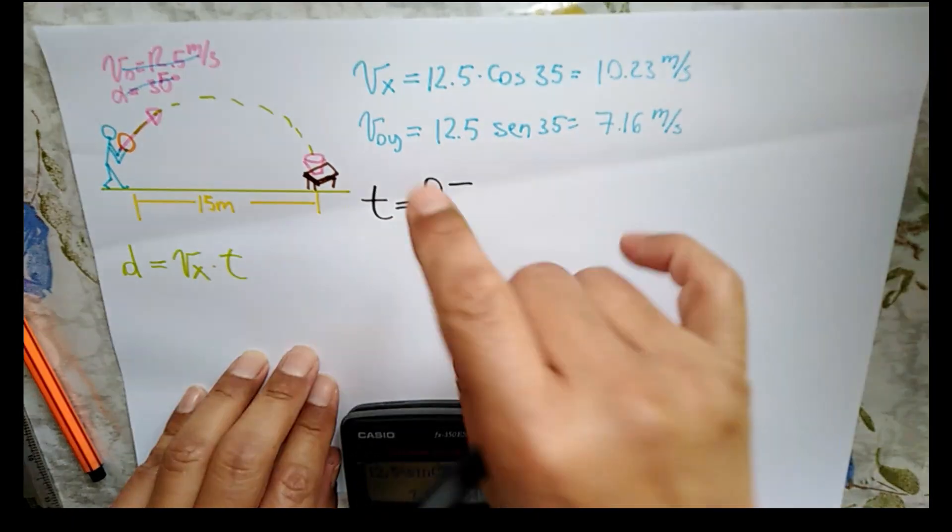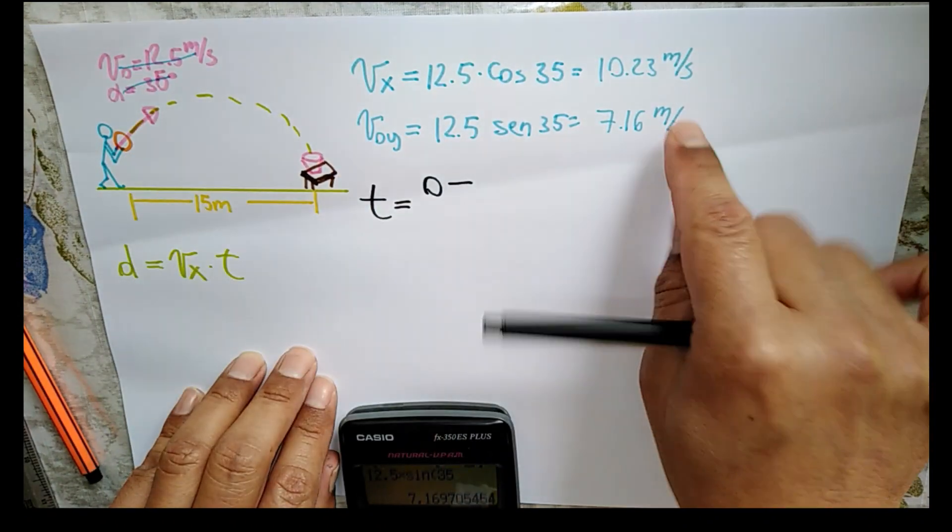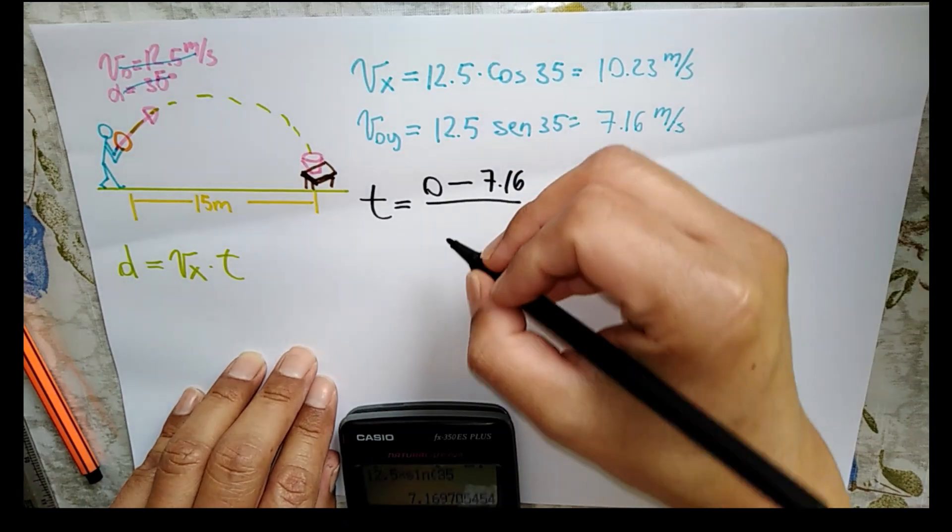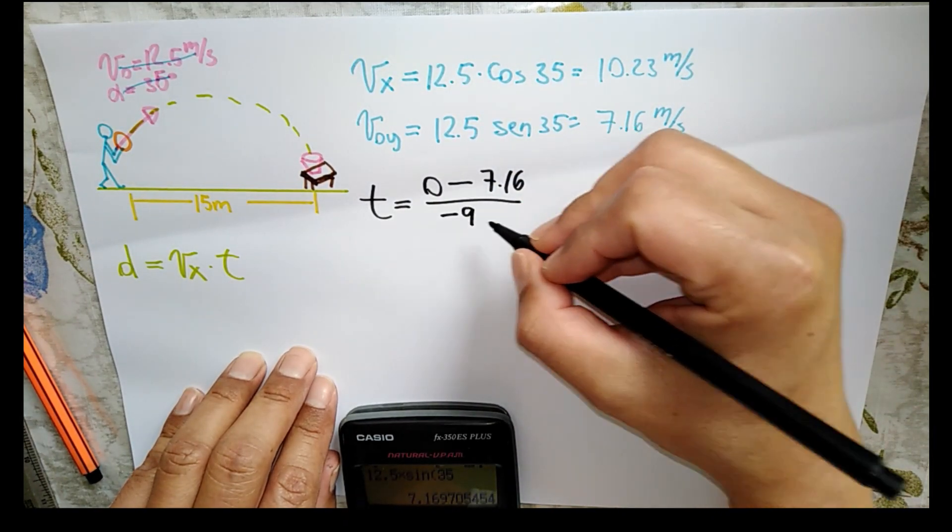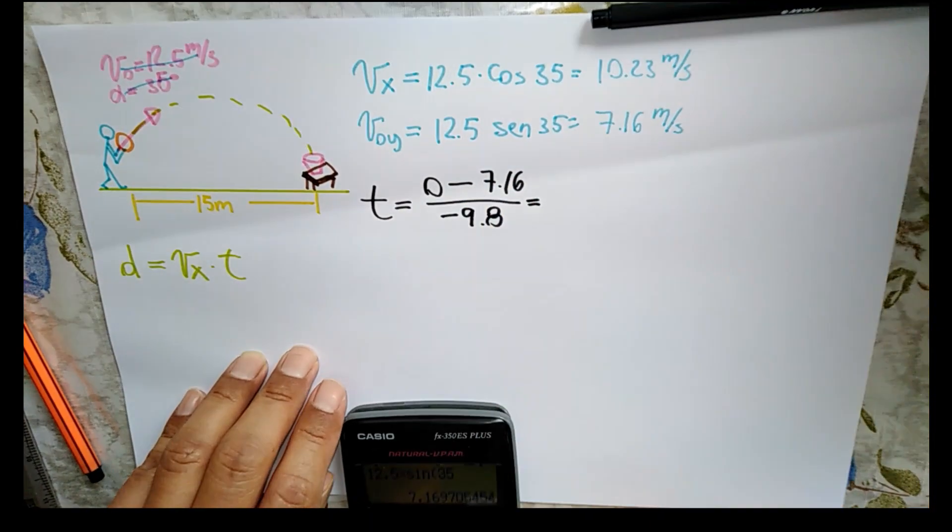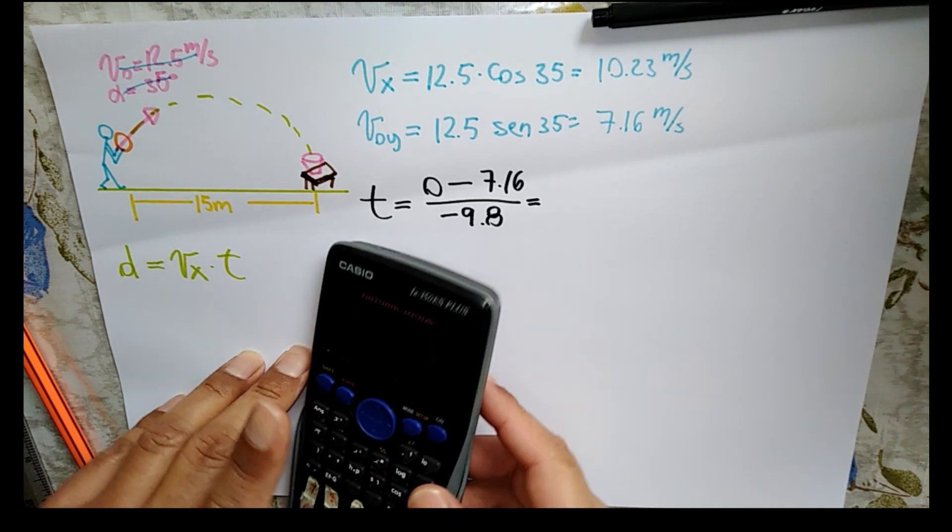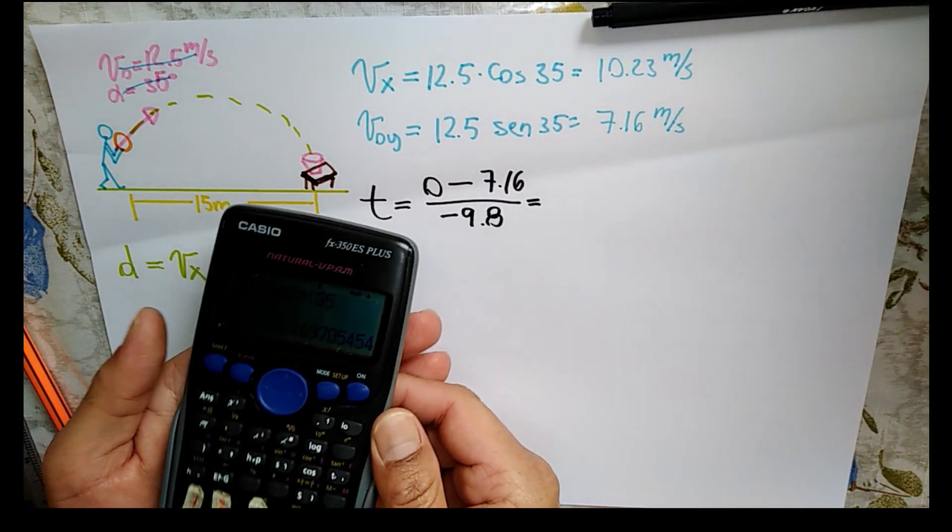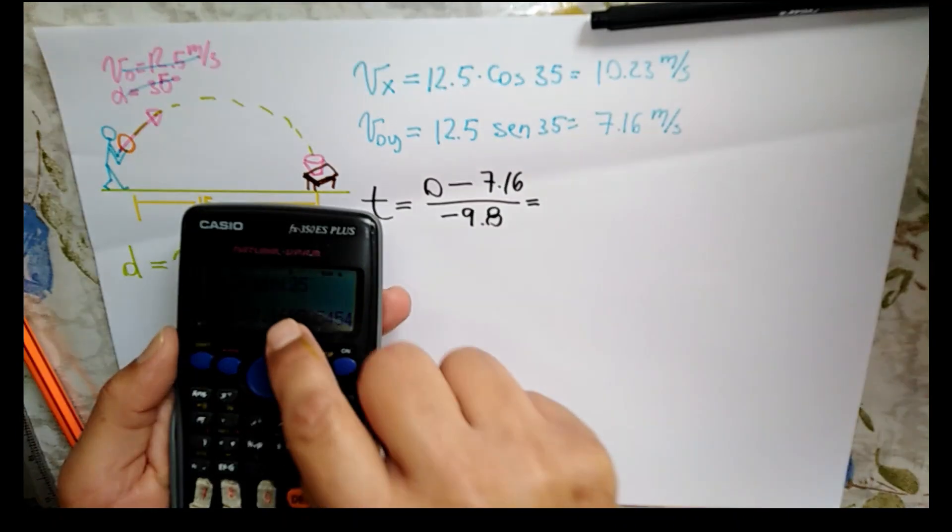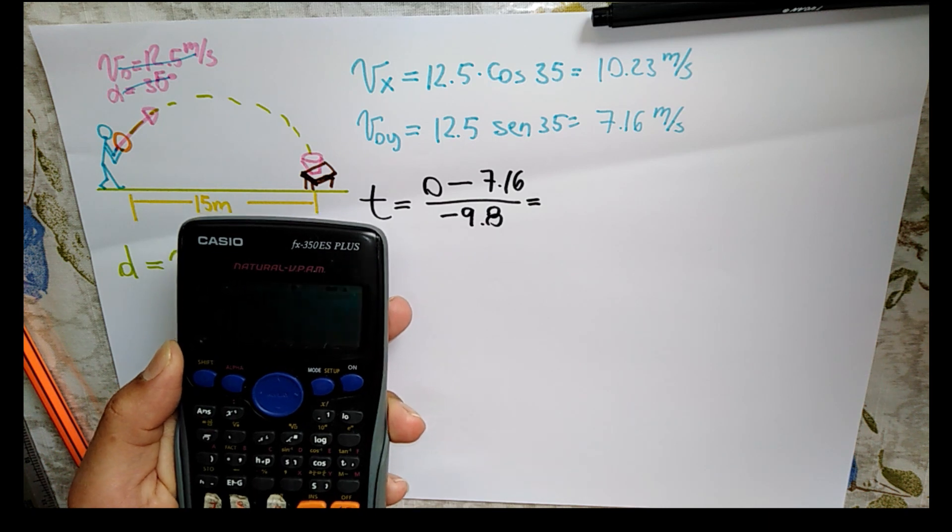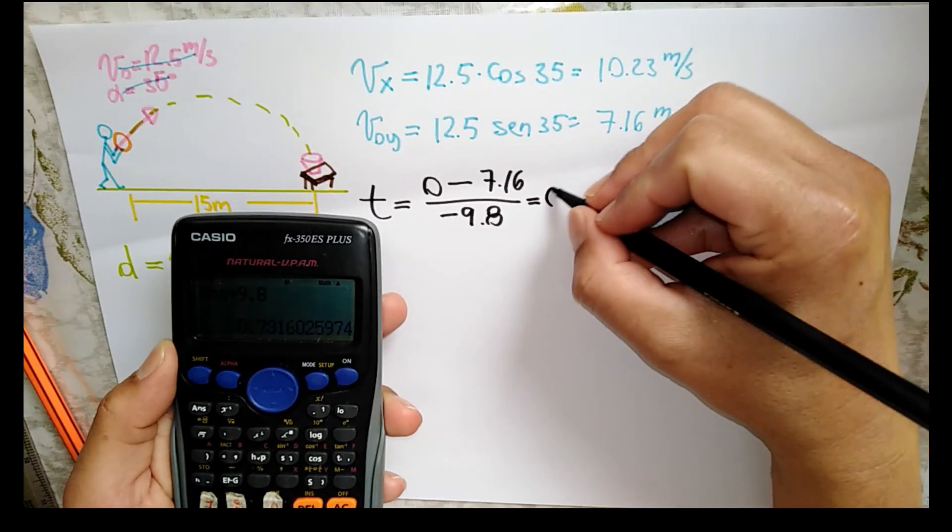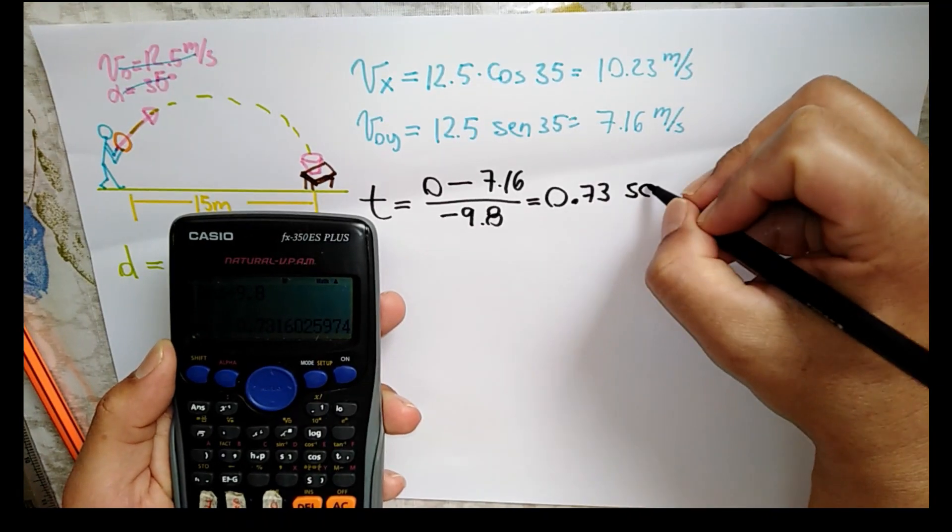La velocidad final en Y es igual a 0, menos la velocidad inicial de Y, que es igual a 7.16 metros por segundo. Y esto va dividido dentro de la gravedad, que en este caso es negativo, 9.8 metros por segundo. Al hacer esa operación, 0 menos 7.16 es -7.16. Al dividirlo, esto negativo dentro de este negativo va a quedar positivo. Entonces, es 7.16 dividido 9.8. Tenemos un tiempo de 0.73 segundos.